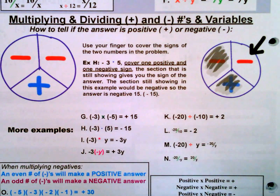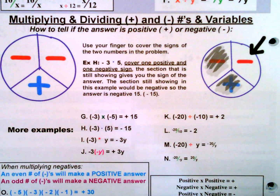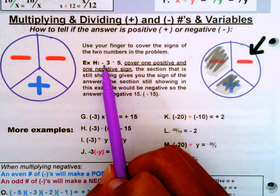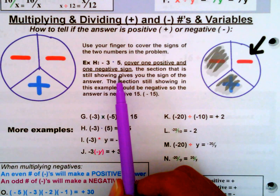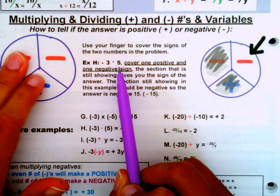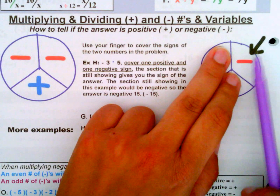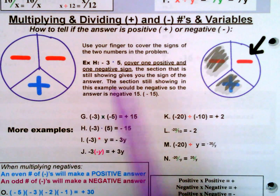Now let's talk about the sign — how we tell if the answer is positive or negative when multiplying and dividing. This sign symbol is very helpful. Draw it on your test or homework if you have difficulty determining the sign. For example H: negative 3 times positive 5 — you cover one positive and one negative, and what's left tells you the sign. The answer is negative, so negative 3 times 5 equals negative 15.